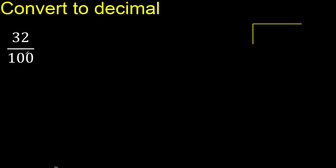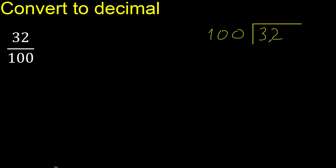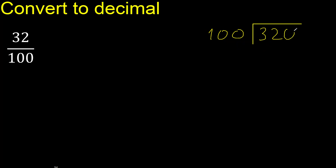32 divided by 100. 32 is less than 100, therefore complete — always complete with 0. Here, complete with 0 point.